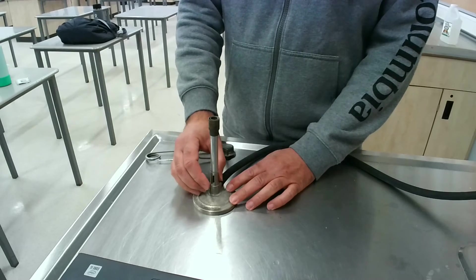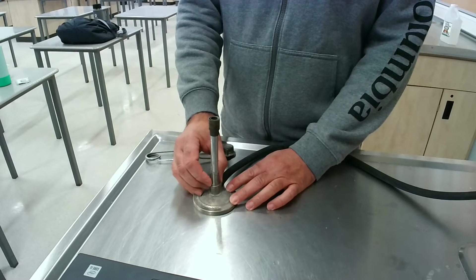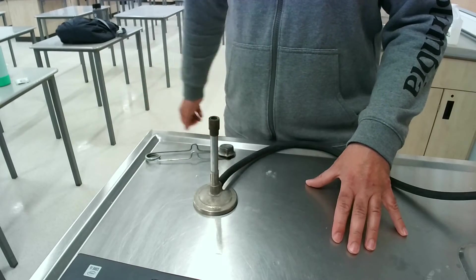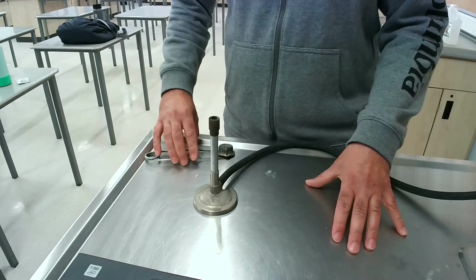To start the Bunsen burner, we want to have that closed. Once we get it lit, we can adjust the amount of oxygen to get the flame we're looking for.